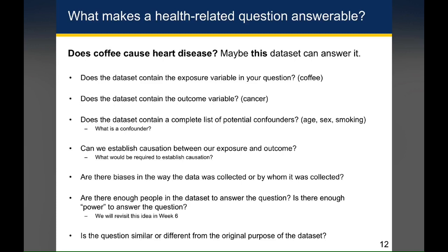There's also the issue of whether there are enough people in the data set to plausibly answer this question — this is related to the concept of statistical power, which we'll come back to later. An obvious example: if you only had five people, where two drink coffee, three don't, and two have cancer, you're not going to be able to make any kind of claim based on that data set. There might also be biases in the data based on the reason for why the data set was collected.